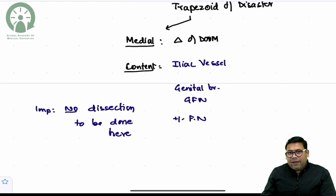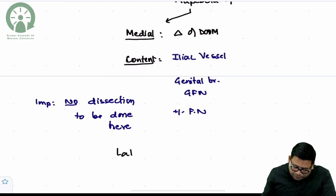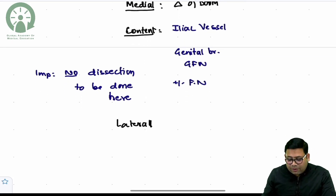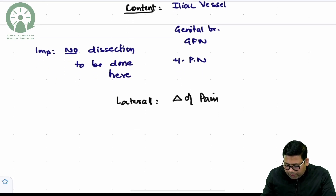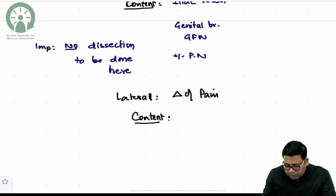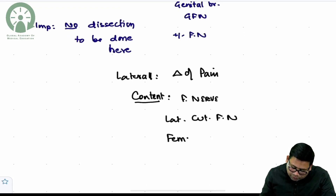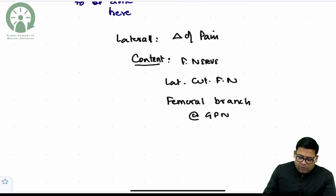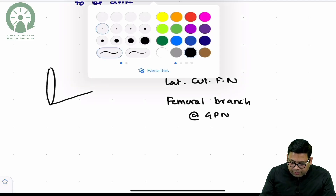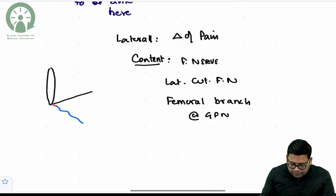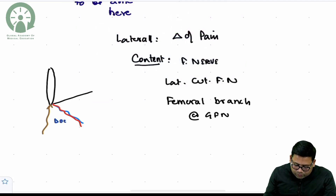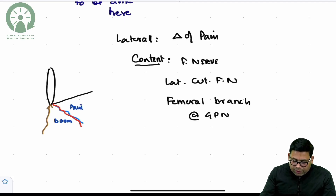Laterally, the triangle of pain is present. Its contents include the femoral nerve, the lateral cutaneous femoral nerve (LCFN), and the femoral branch of the genitofemoral nerve. The iliopubic tract, the gonadal vessels, and the vas define the boundaries. The triangle of doom is medial to the gonadal vessels, and the triangle of pain is lateral.